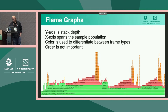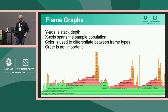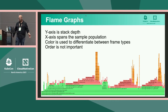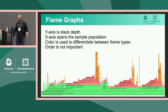Flame graphs look like multiple stack traces stacked on top of each other. The y-axis is the stack depth — basically the stack trace itself. The x-axis is the sample population; the wider the flame, the longer a method call took. Color is usually used to differentiate between different types of method calls — for example, green can be Java code, red can be C code, and orange can be user-space code. The order is usually alphabetical and not that important.